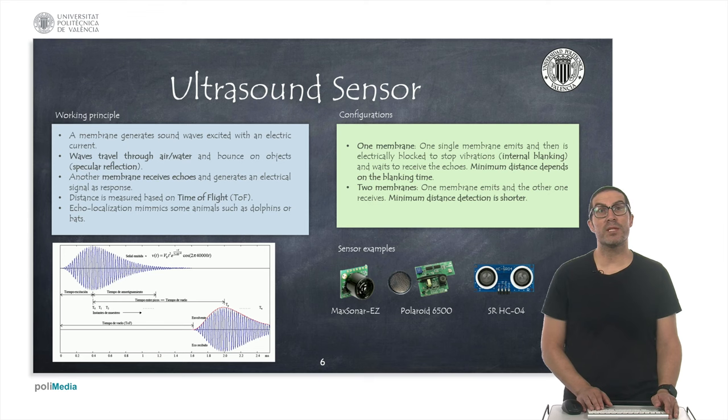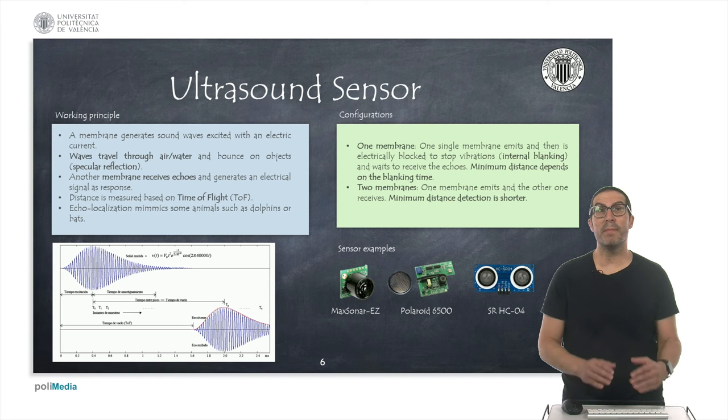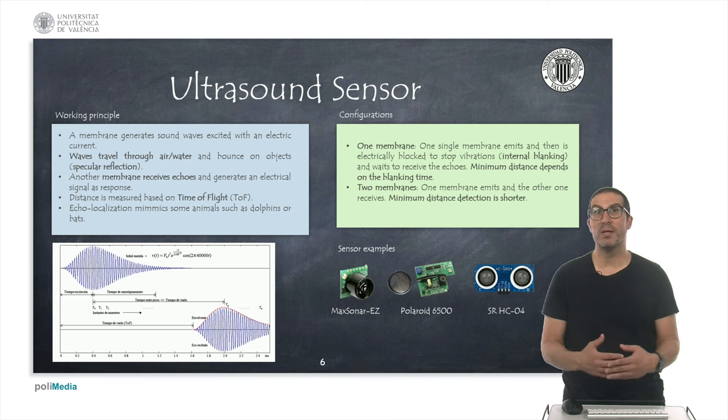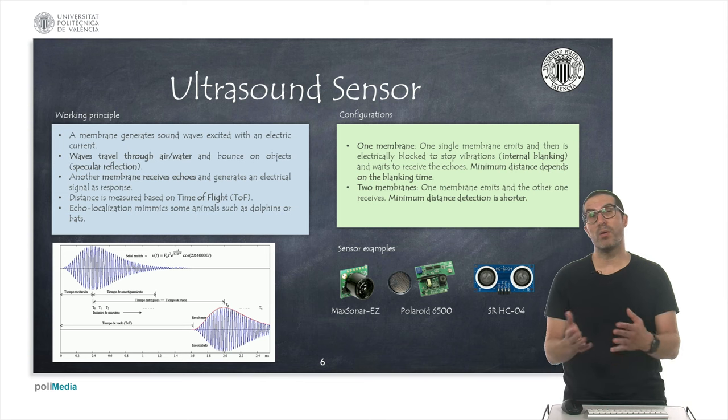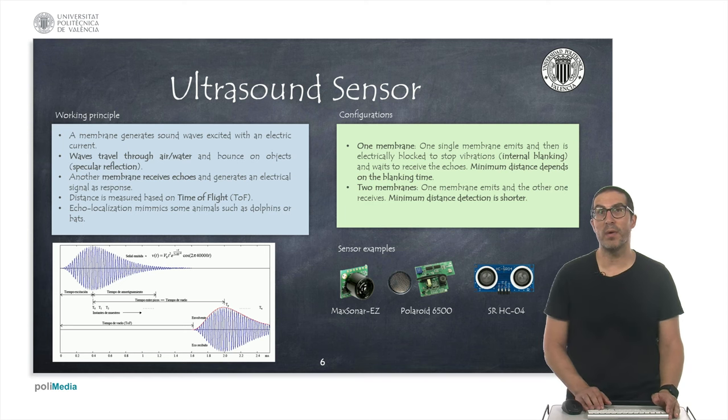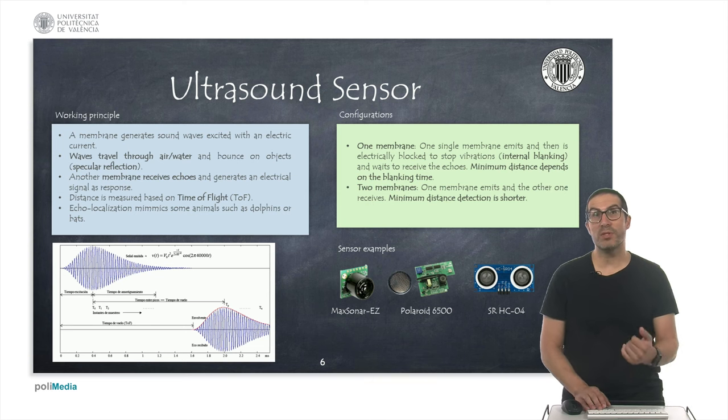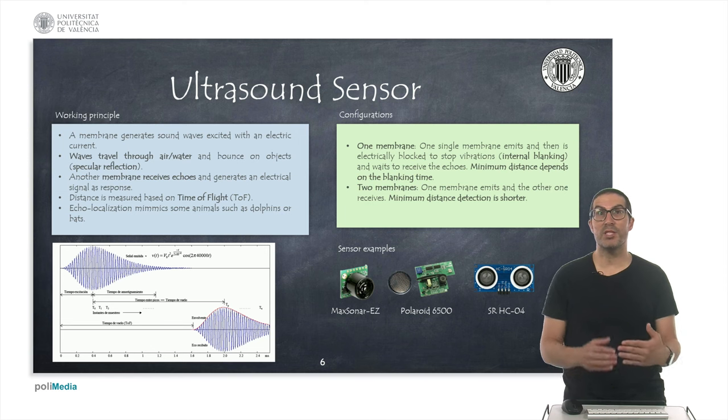Then we have ultrasound sensors that are used by many robots indeed, and the operating principle is based on emitting some waves that are generating from the excitation of a membrane that vibrates and generate these waves, and they travel through the air or water and bounce off on objects like light on a mirror, so it's a specular reflection.